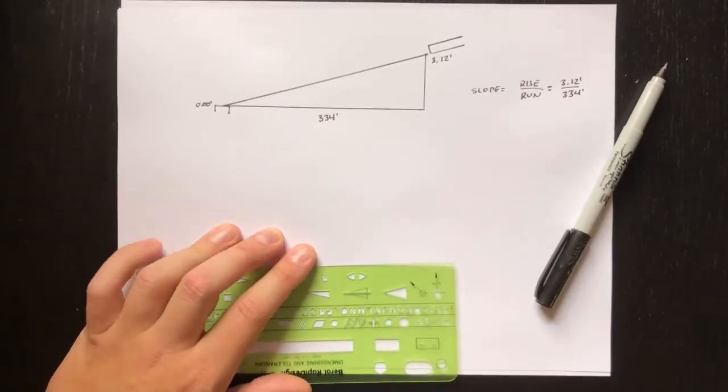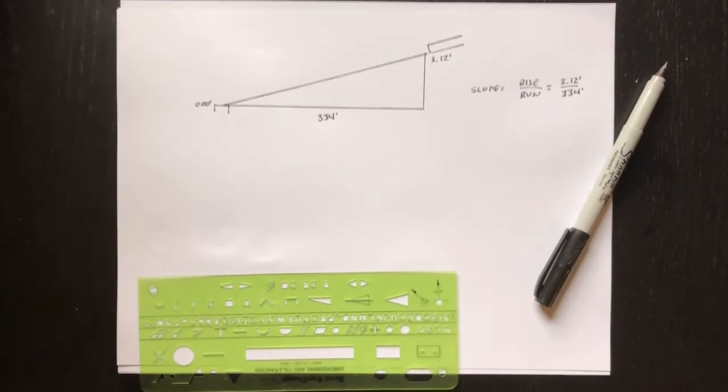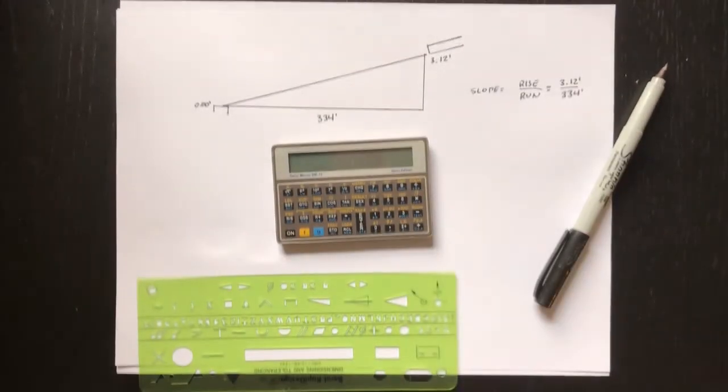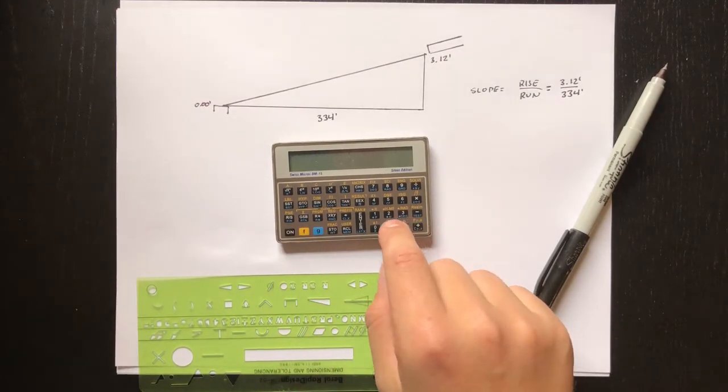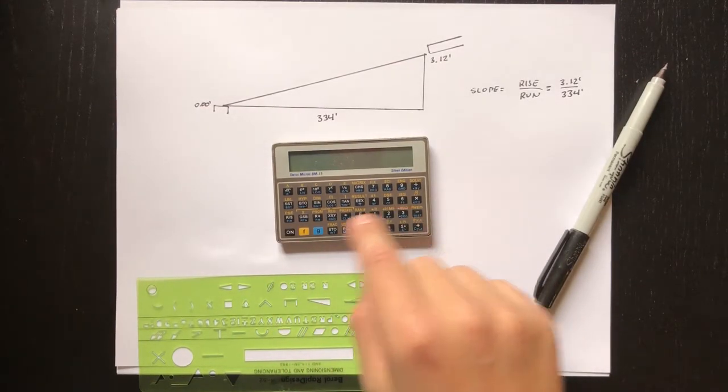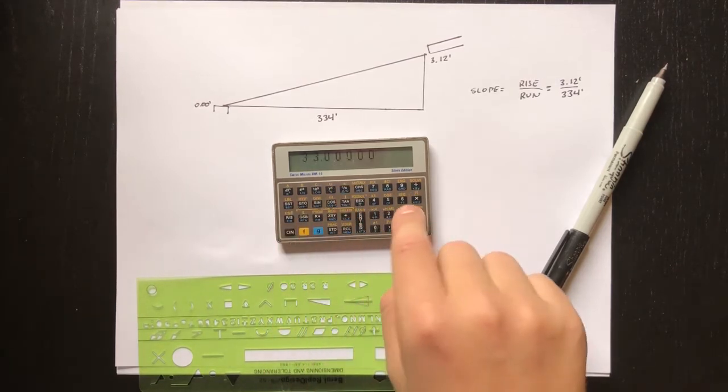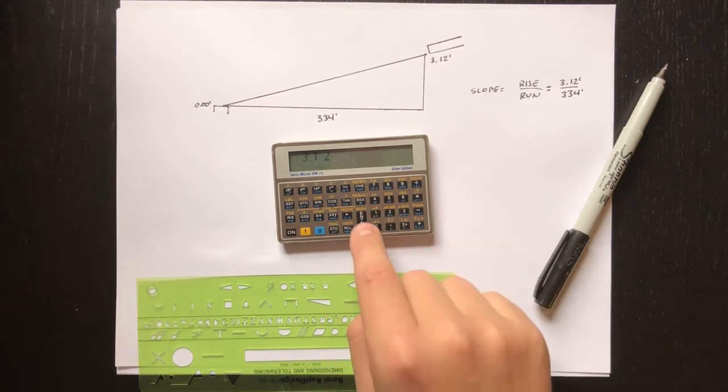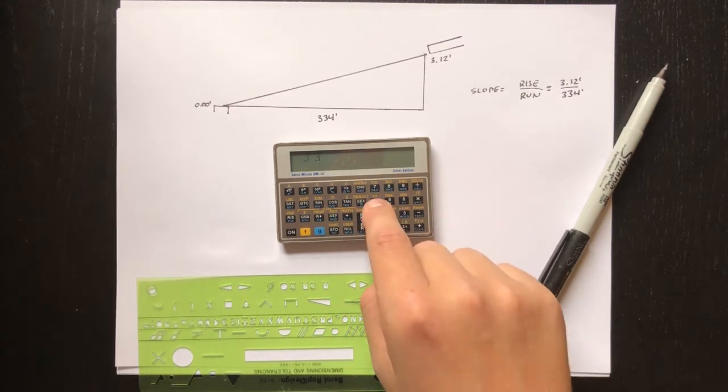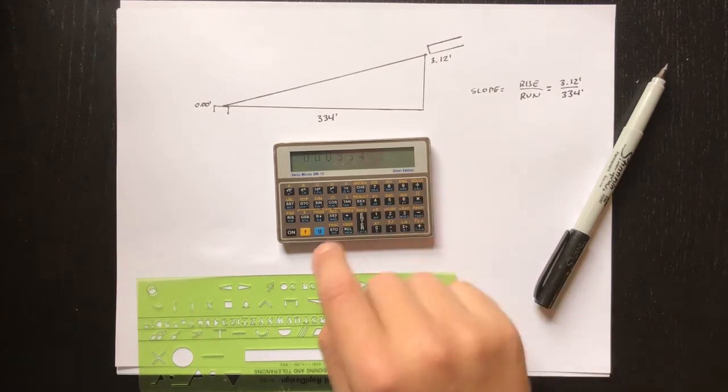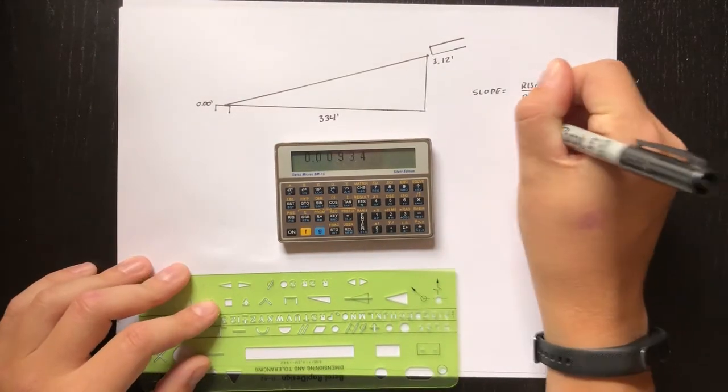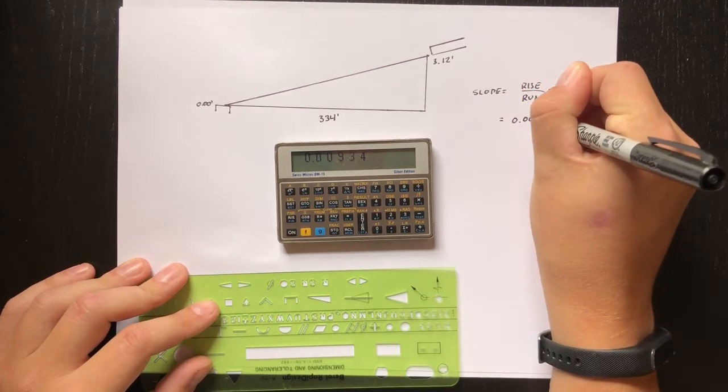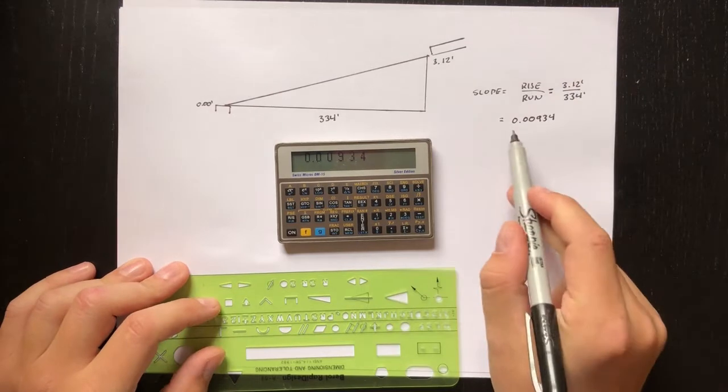I'll grab my calculator. I'll do 3.12 feet divided by 334 feet. So I get 0.00934. That's the actual slope.